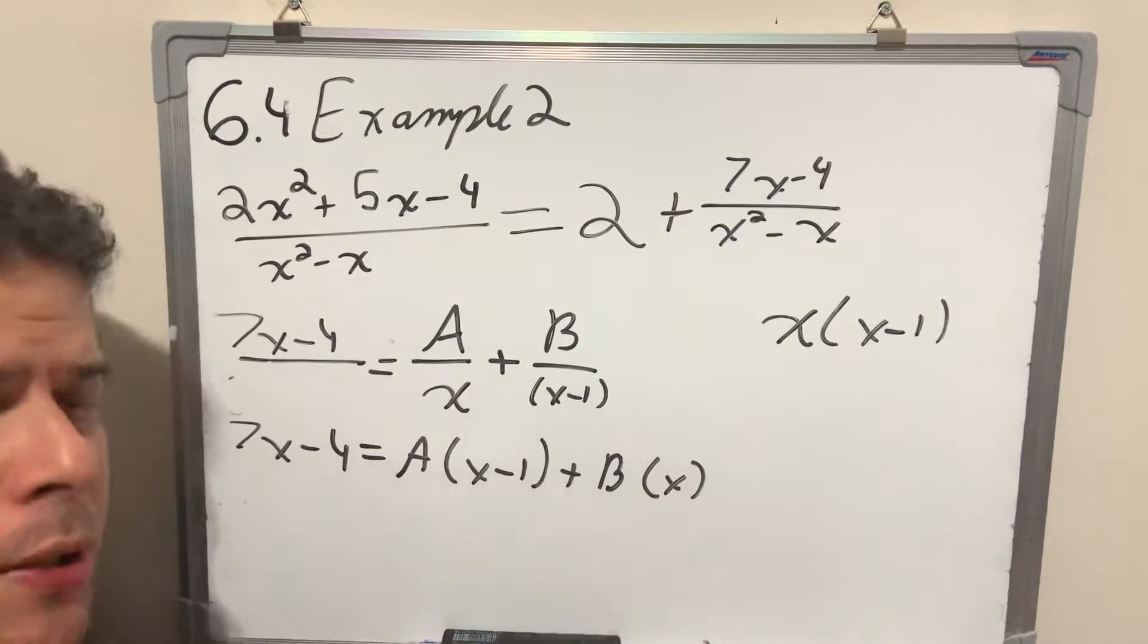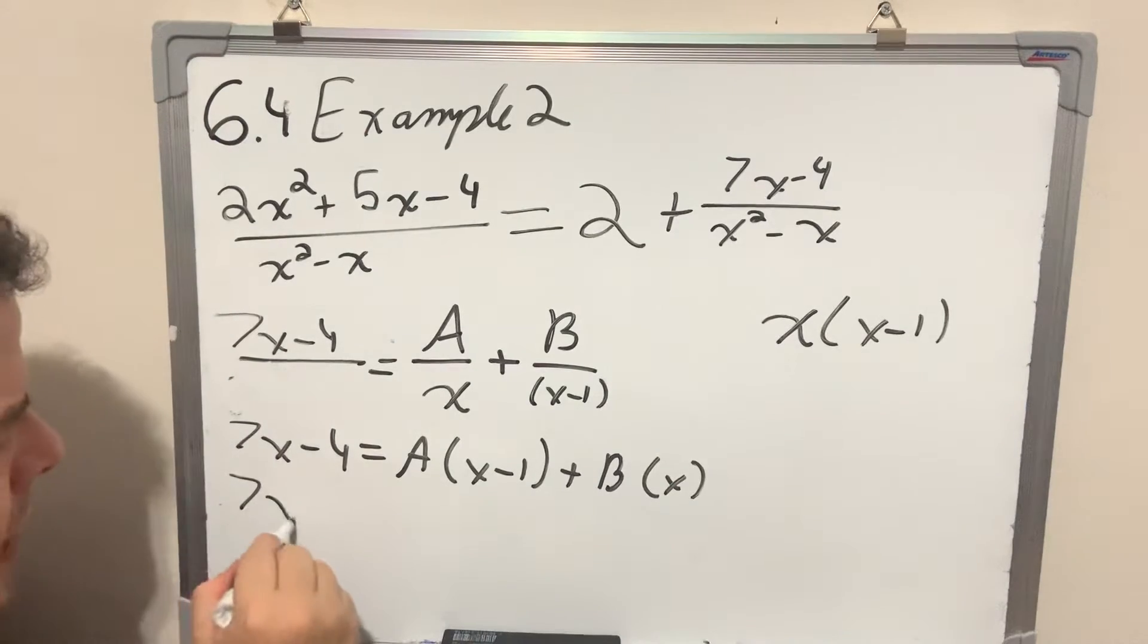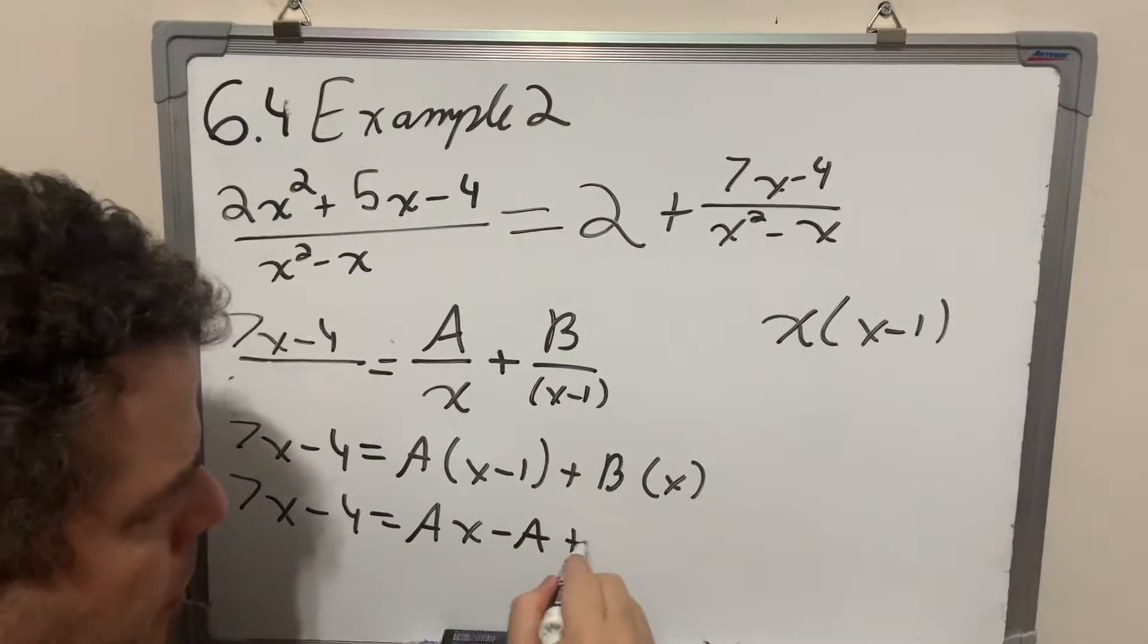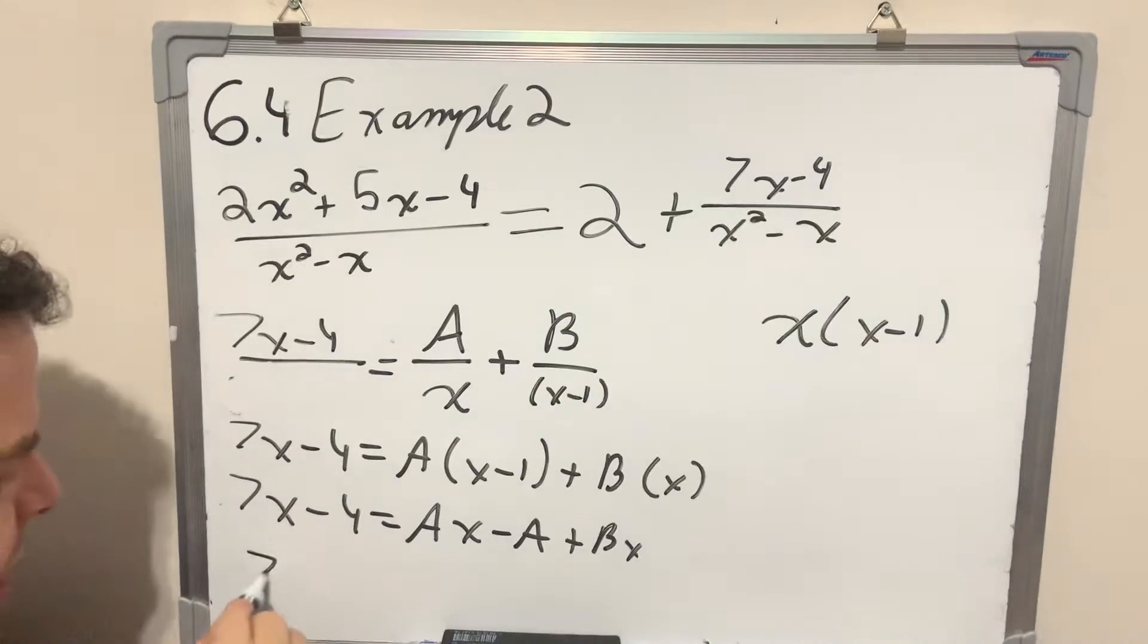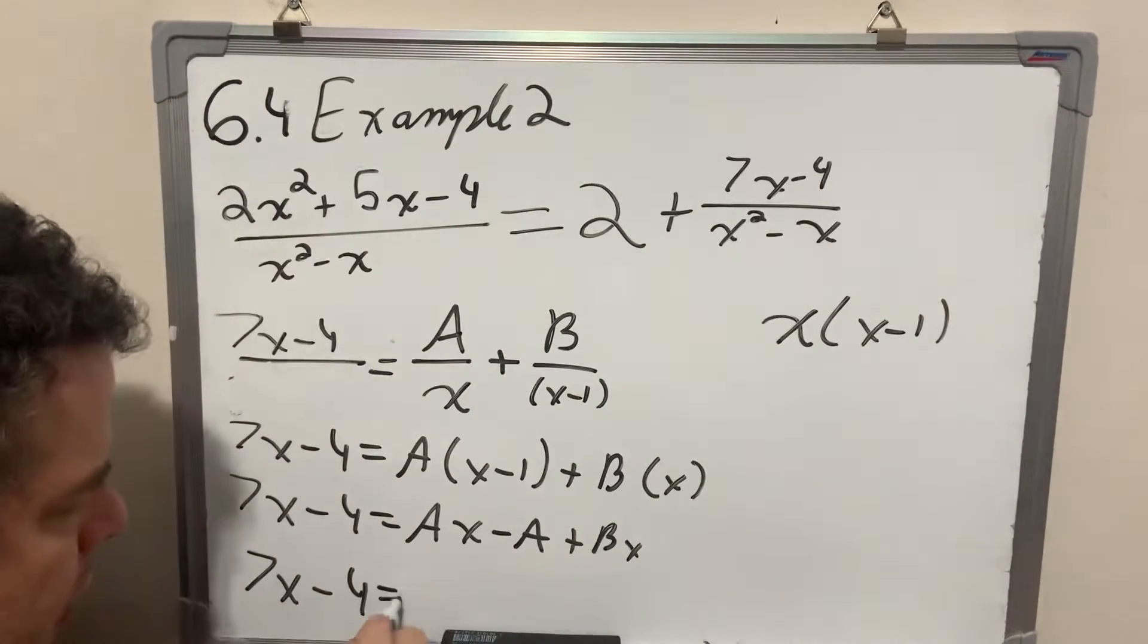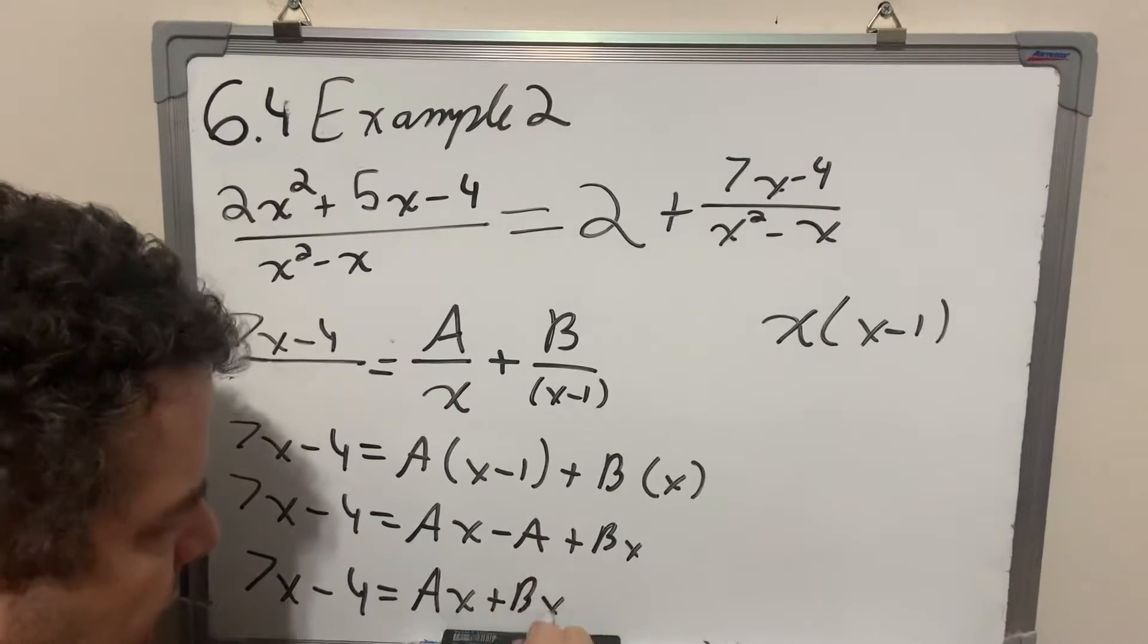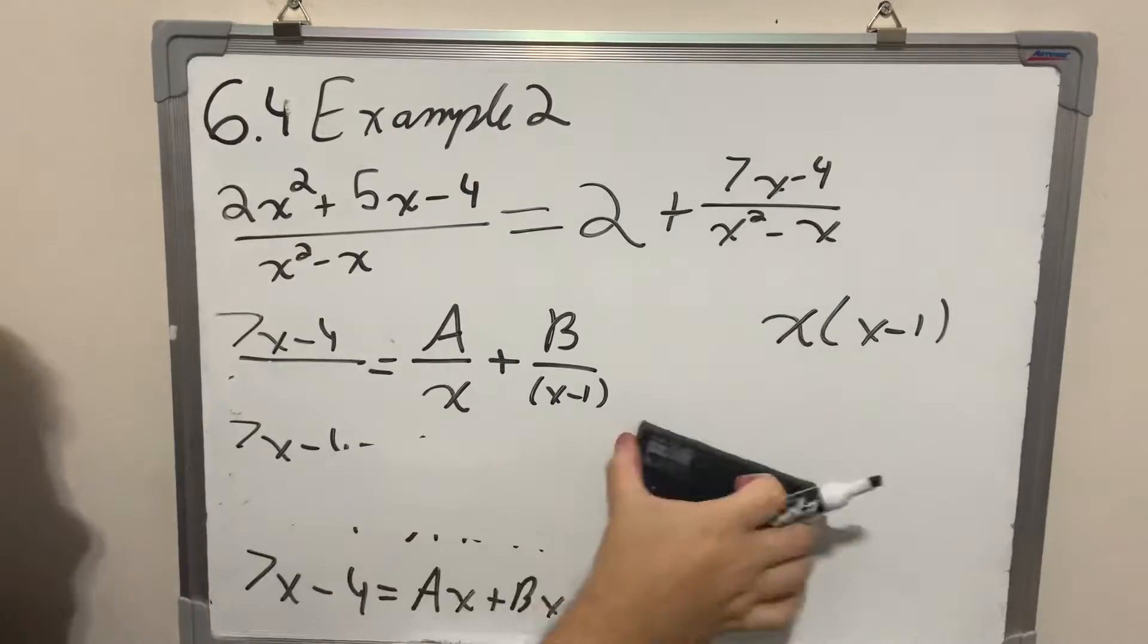My a multiplied my x minus 1 and my b multiplied my x. I'm going to distribute the x and then group like terms. So again, I'm going to rewrite this as ax minus a plus bx. Just multiply. Now I'm going to put my terms together. 7x minus 4 equals this a has an x, this b has an x, and this a is by itself. Now I can erase all of this.